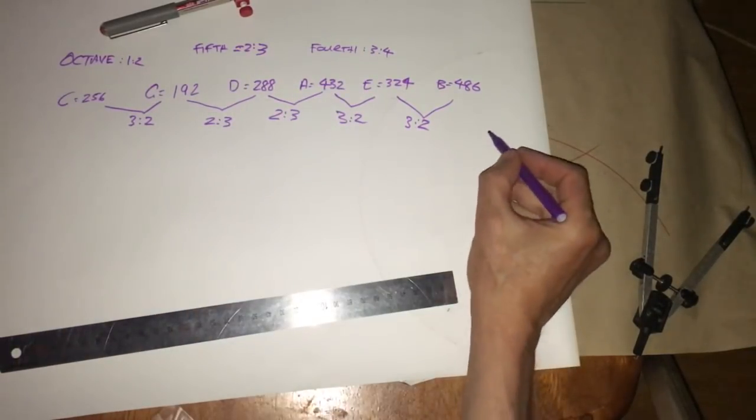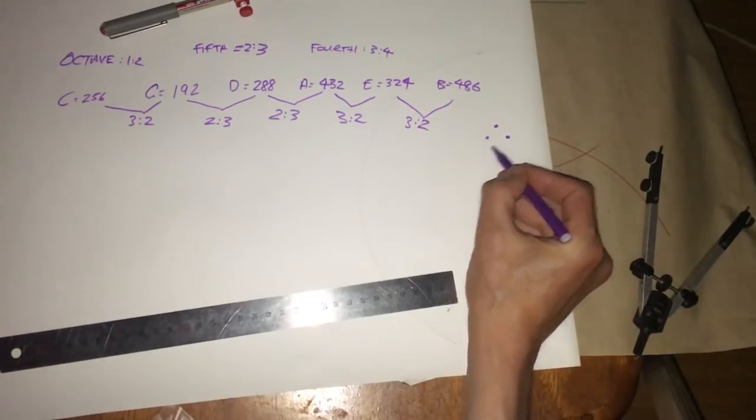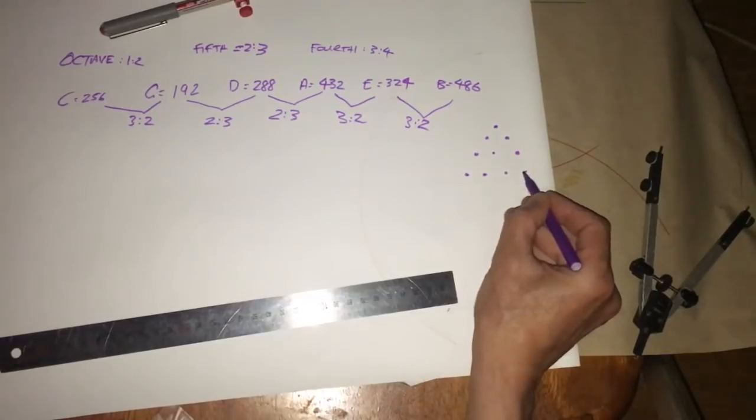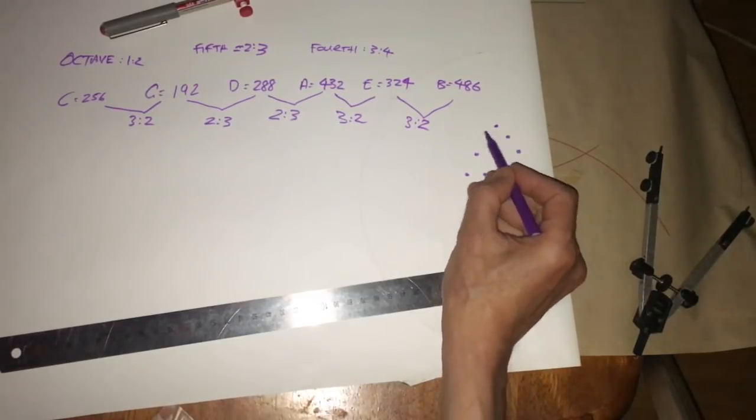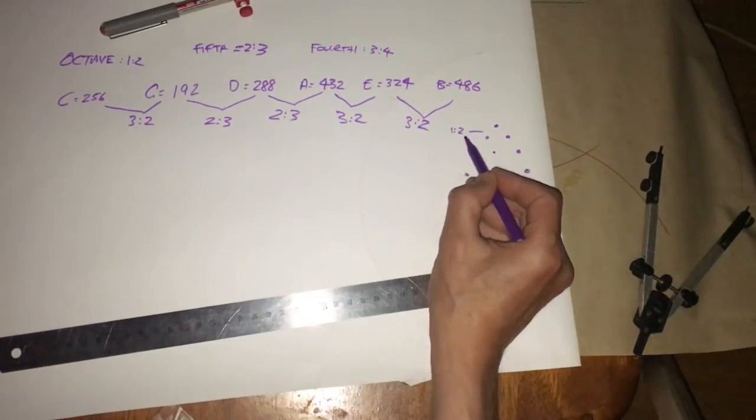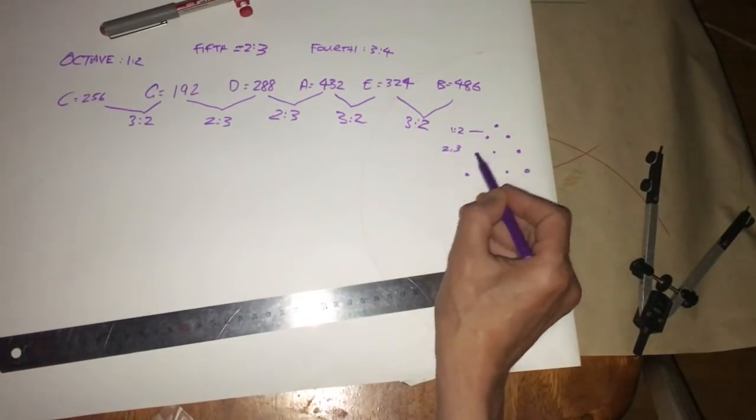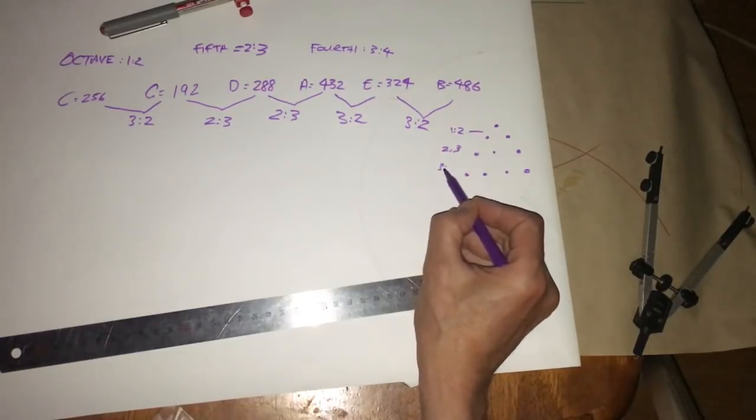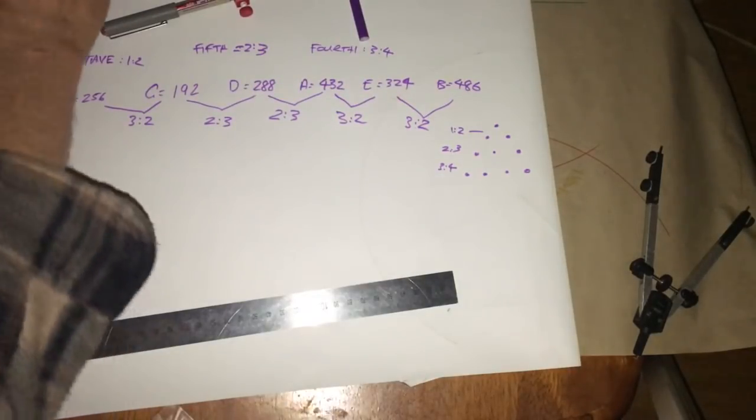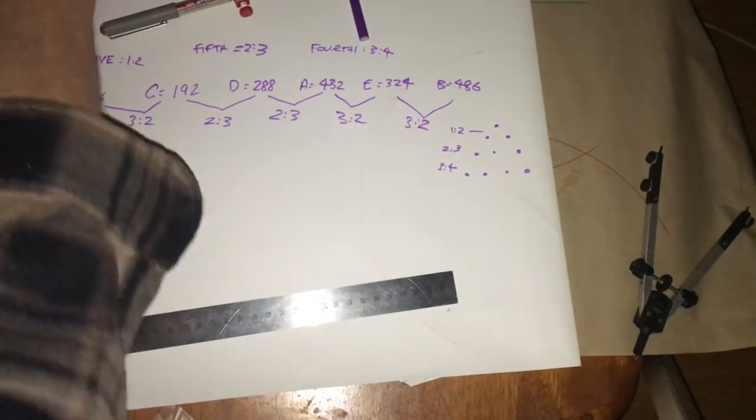Now you can also do it with a tetractys, this Pythagorean symbol, which is a 1 to 2 scale, and then a 2 to 3, and then we have a 3 to 4. Everybody was asking me about the compass and straightedge and how to do it to get these.